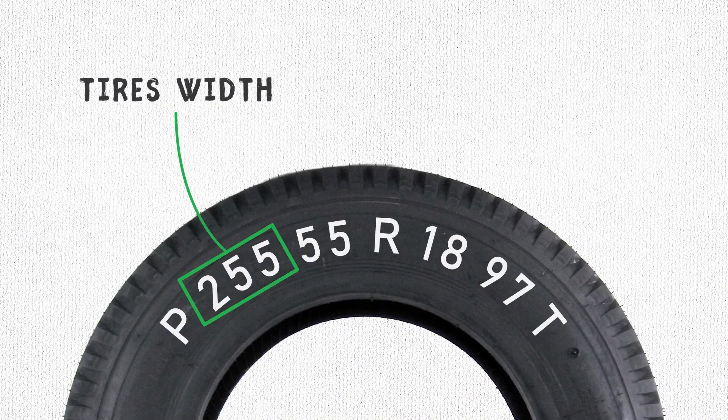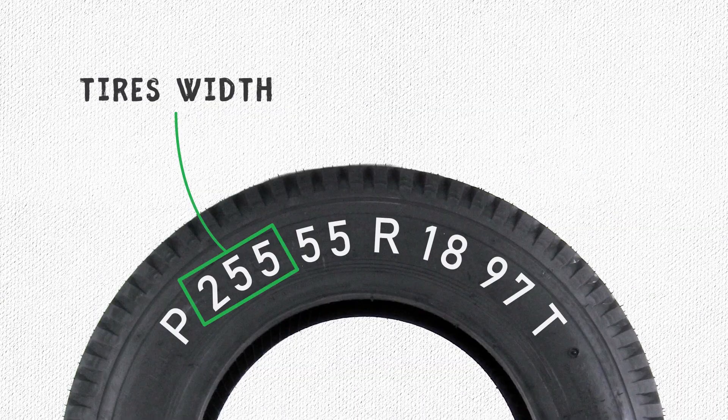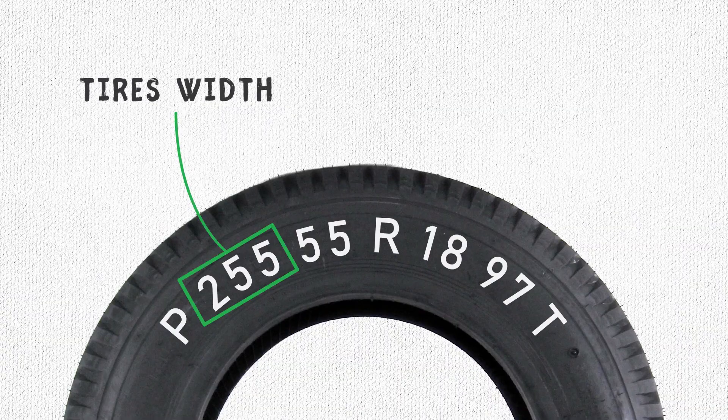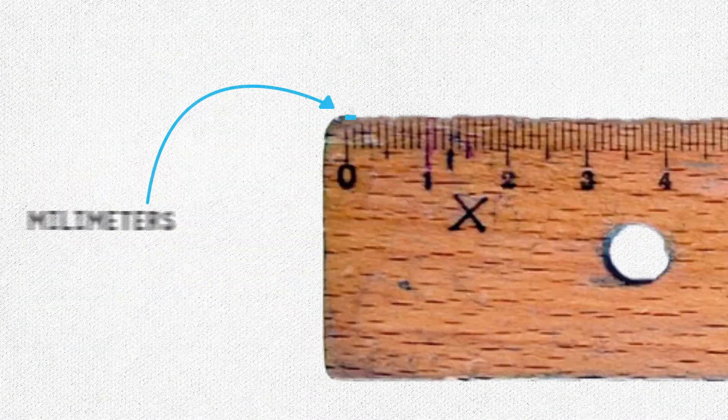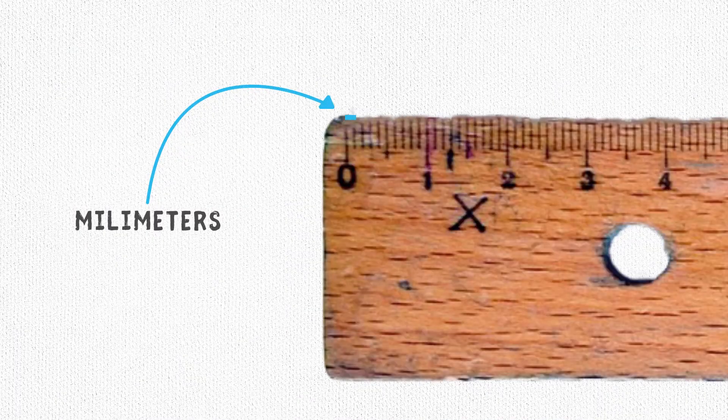The next three digits are your tire's width at its widest, measured in millimeters. Why? To confuse you.